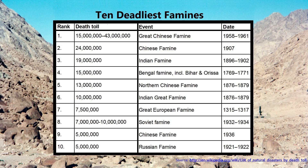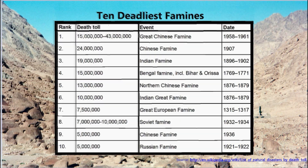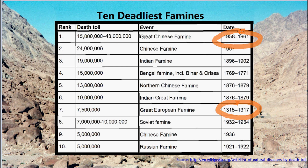First we need a set of historical data to place on a timeline. I want to make a timeline of the world's 10 deadliest famines. Identify the earliest and most recent dates of the events to be placed on the timeline. The earliest date is 1315 and the most recent date is 1961.